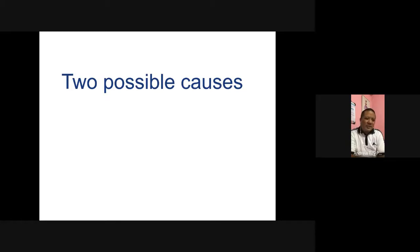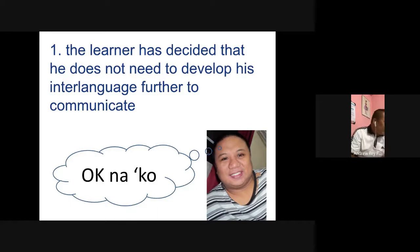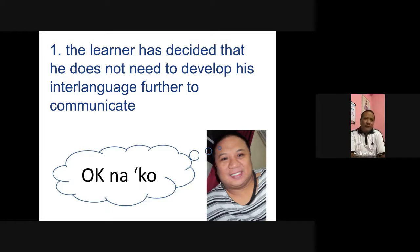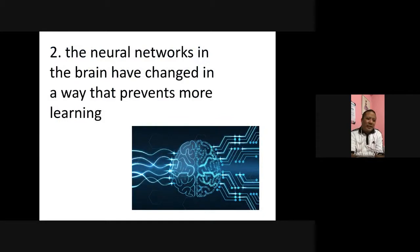There are two possible causes of fossilization. One is that the learner has decided he does not need to develop his interlanguage further to communicate — just like Alberto, who realized his level of English was enough to earn money as a fruit picker. The other cause is that the neural networks in the brain have changed in a way that prevents more learning — this is loss of plasticity. When the brain loses plasticity, the neural networks prevent further language learning.